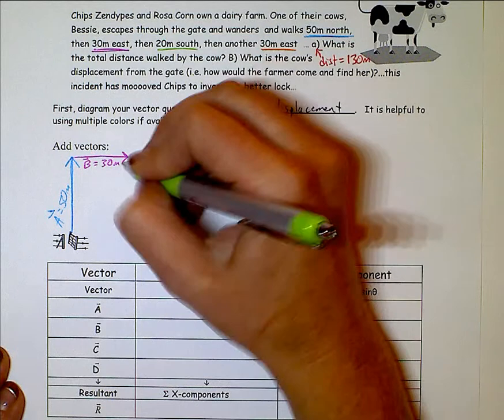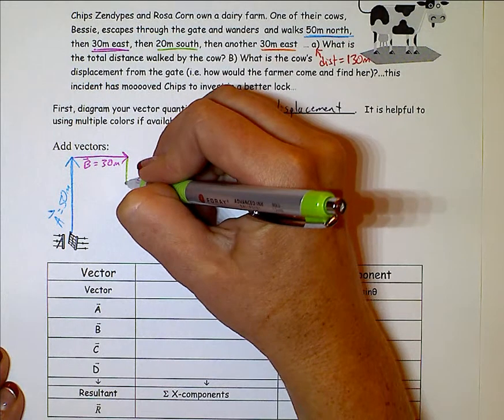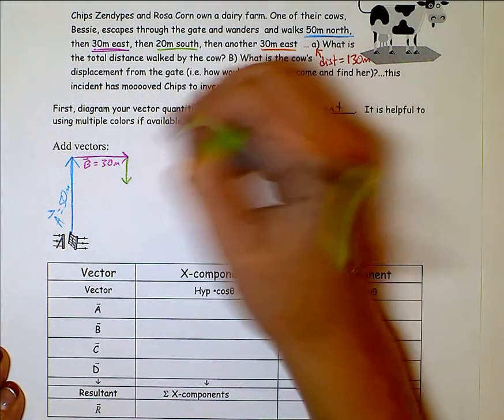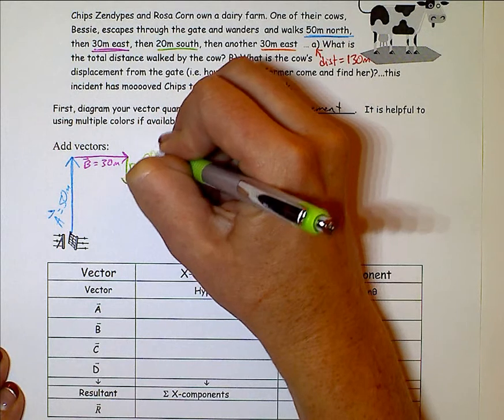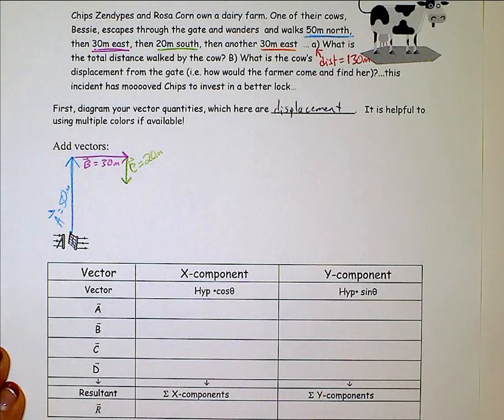And then goes to the south. So this is down. Again, 20. That would probably be a good guesstimate. And then last, another 30 to the east.